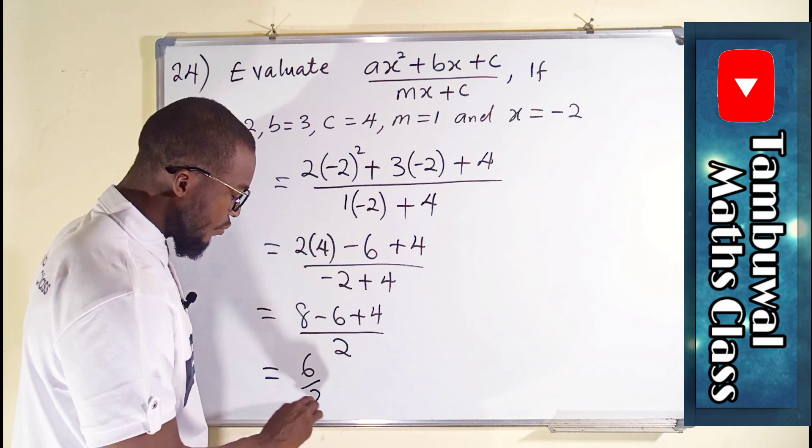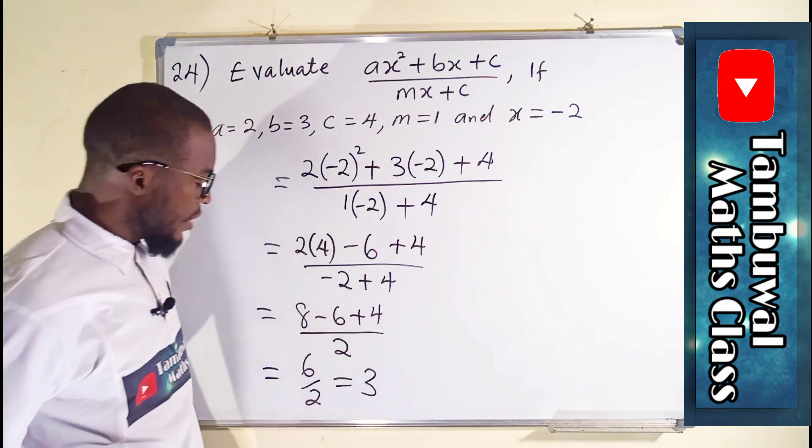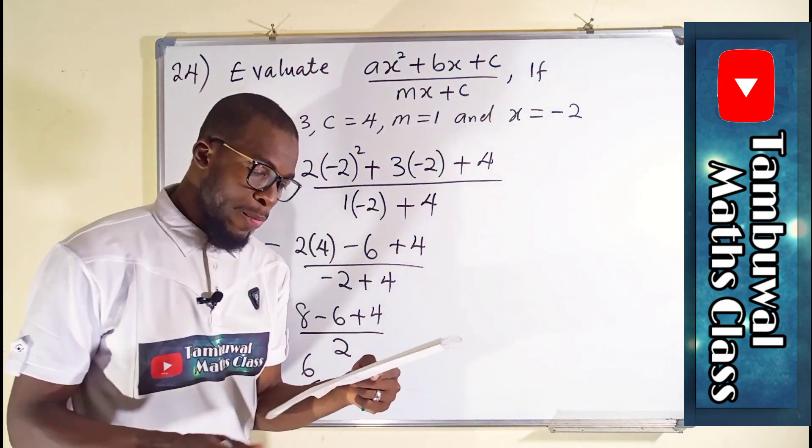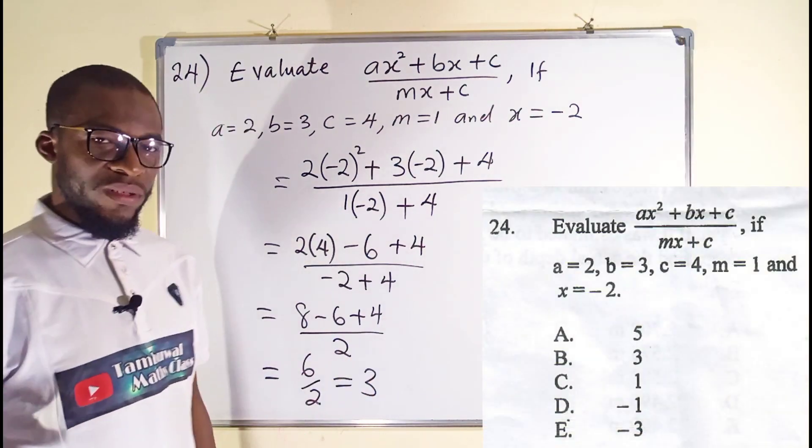This is equal to 8 minus 6 is 2, and that 2 plus 4 is 6, so we have 6 over 2. And finally, we have 6 divided by 2 is 3, and our right option here is B, which is 3.